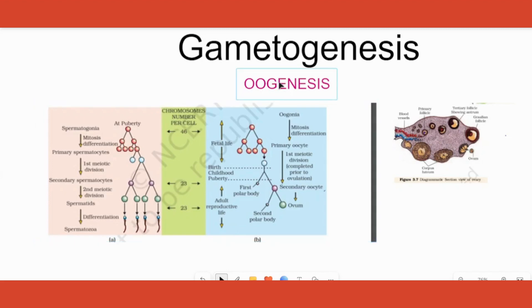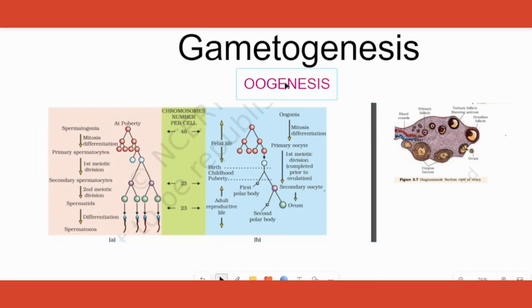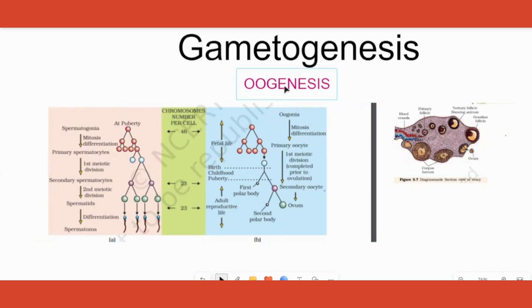Oogenesis means production of ova. Unlike boys, who start producing sperm only during puberty — the entire process of spermatogenesis starts only during puberty — for girls it is not like that. The production of ova will happen only through her first menstrual cycle's 14th day, but when does oogenesis actually start?